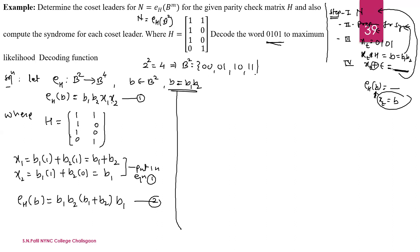The function is defined as e suffix h of b, where b is b1, b2, and the output is b1, b2 as it is, along with x1 and x2 — so the output is 4 digits. The parity check matrix H has first row: 1, 1, 1, 0 and second row: 1, 0, 0, 1 — this is the identity matrix portion. We calculate x1: b1, b2 as a row, multiplied to the first two elements of the first column, giving b1 into 1 plus b2 into 1, which equals b1 plus b2. And x2 equals b1 into 1 plus b2 into 0, giving b1.